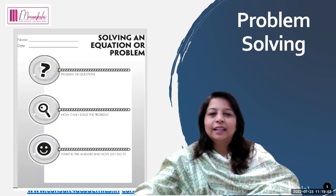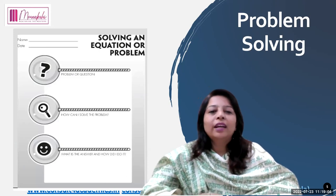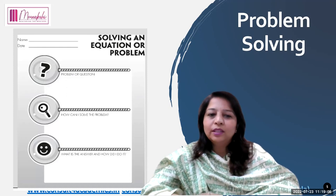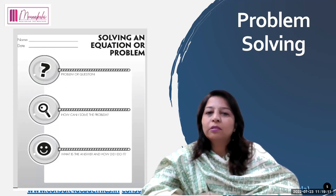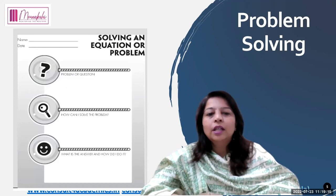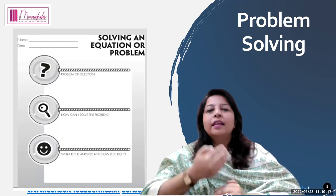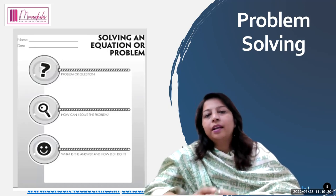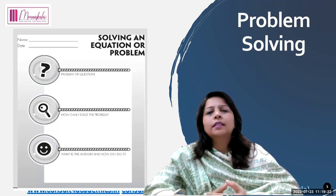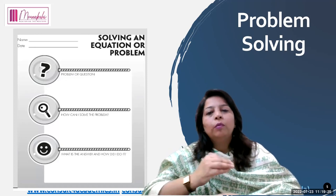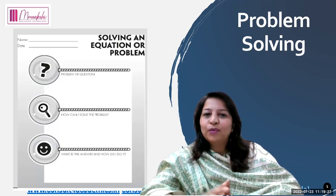Next is a problem-solving technique. For solving an equation or a problem, the problem is to be mentioned first. Then we write how we can solve the problem, what the answer is, and how we did it — the plan and then the action. This is a kind of computational thinking: dividing the problem into different steps and then solving it.